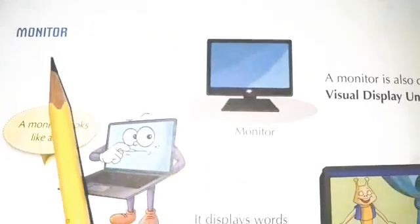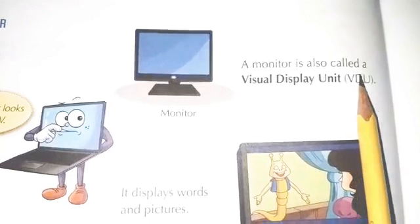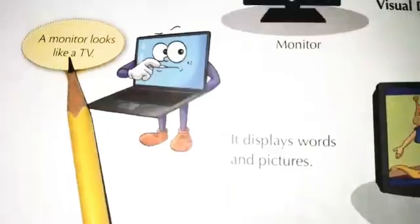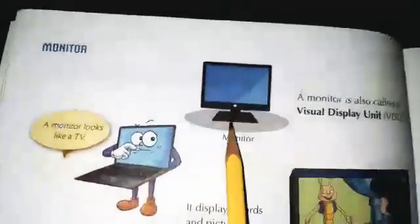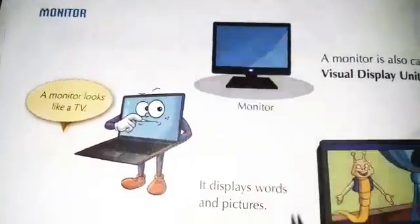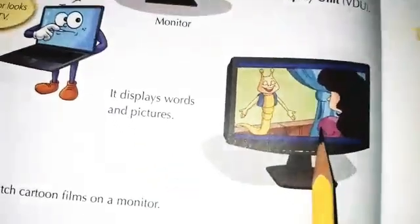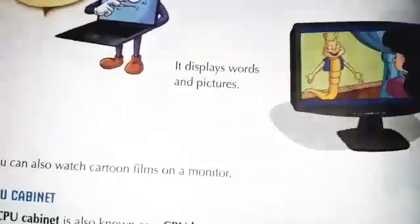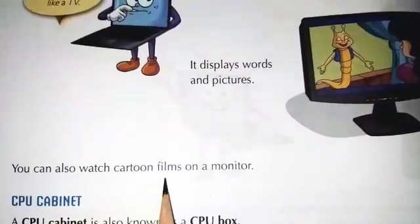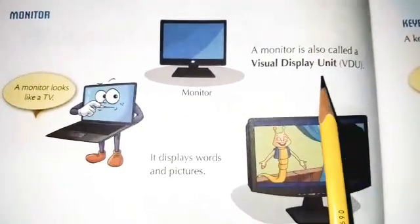On page number 12, the first thing is the monitor. A monitor is also called a Visual Display Unit. A monitor looks like a TV. It displays words and pictures — it is where you can see everything on the computer.